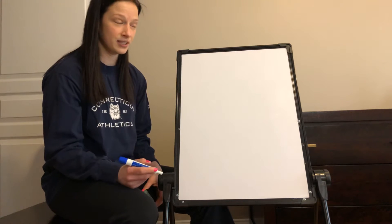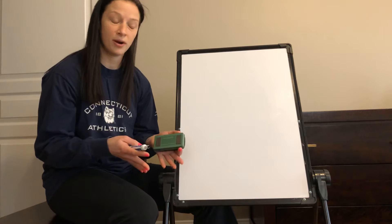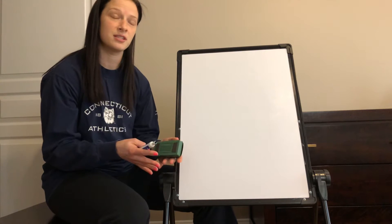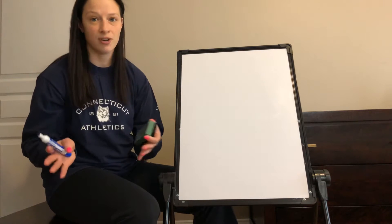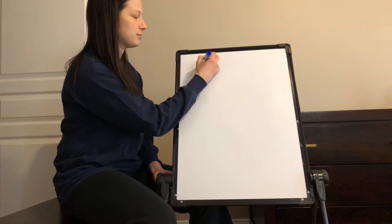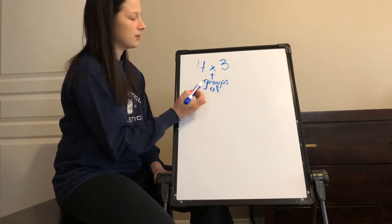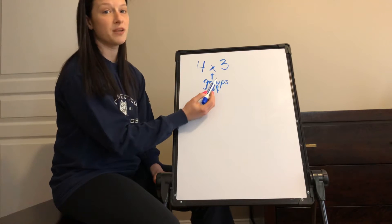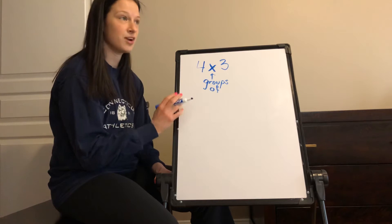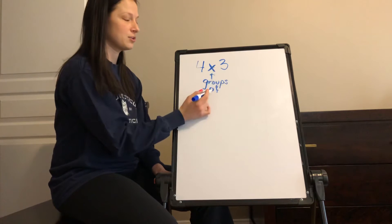A really important thing I need all students and parents to understand is that whenever we're multiplying with fractions, we want to think about what we know about whole numbers that is going to help us. There are similarities and differences between multiplying with whole numbers and multiplying a whole number by a fraction. We always want to think about what is the same and what's different. The multiplication symbol stands for 'groups of' — that's going to be really important. And then later on we'll be thinking about it as 'parts of,' so the word 'of' is really important.